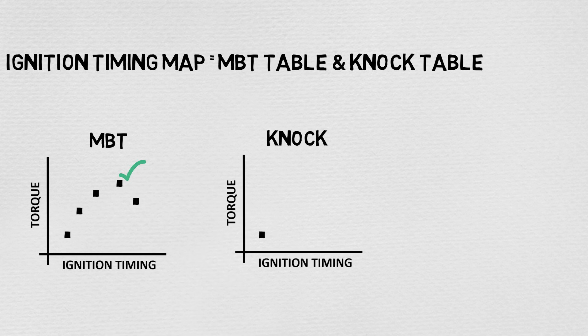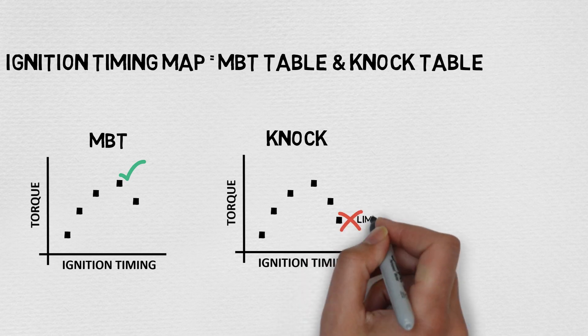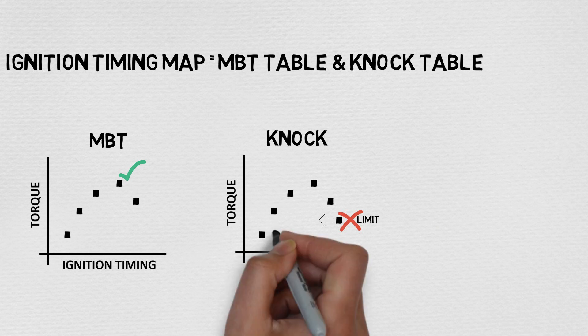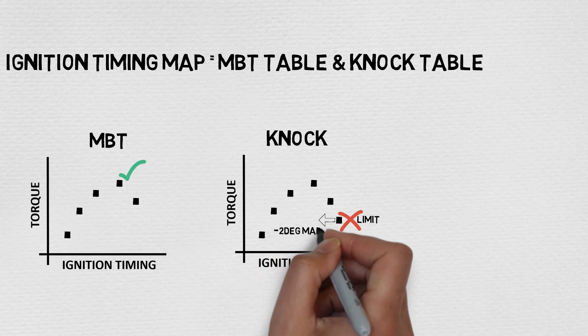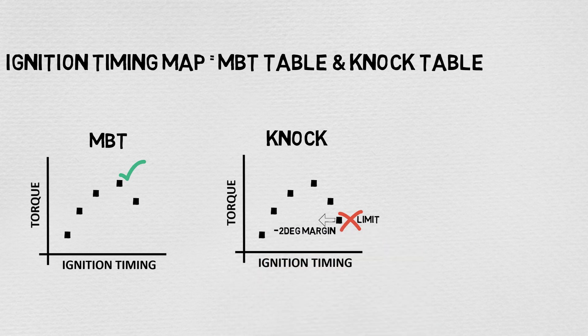For the knock map, timing is slowly advanced until knock occurs. This point is known as knock limit. Then that variable is retarded about 1 to 2 degrees as a safety margin. This is the reason why aftermarket tuners have some area for improvement.